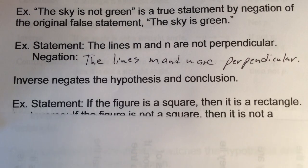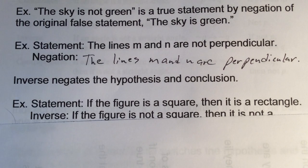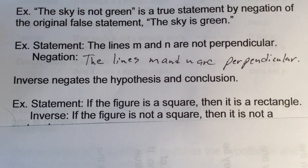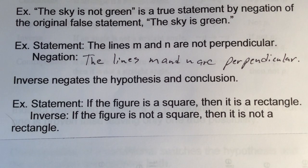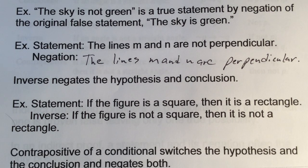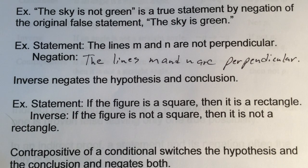The inverse negates both the hypothesis and conclusion of a conditional. A conditional is an if-then statement. For example, if the statement is 'if the figure is a square, then it is a rectangle,' the inverse would be 'if the figure is not a square, then it is not a rectangle.'